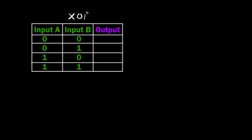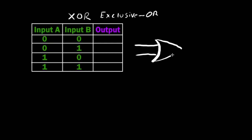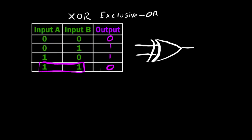Next we have one of my favorite gates — the XOR gate, otherwise known as the exclusive OR gate. It is quite similar to a normal OR gate, and the symbol looks very similar: just add another curved line at the back. In a normal OR gate the output is one whenever at least one input is one, giving outputs of zero, one, one, one. But the exclusive OR makes it strictly one or the other and not both — so if both inputs are one, we get a zero. Exclusive OR means input A or input B, but not both at the same time.